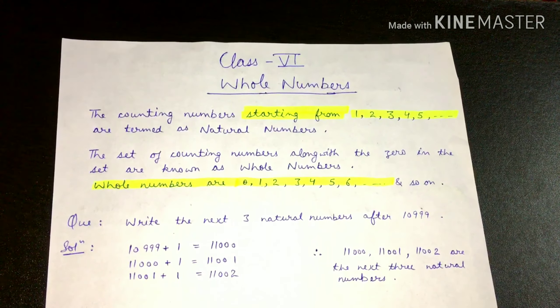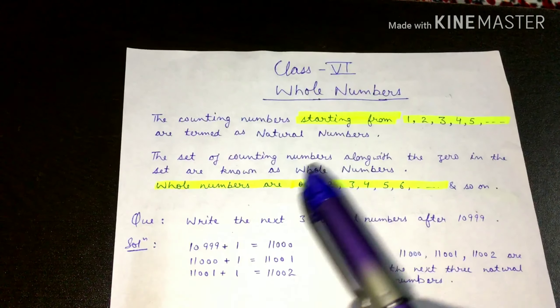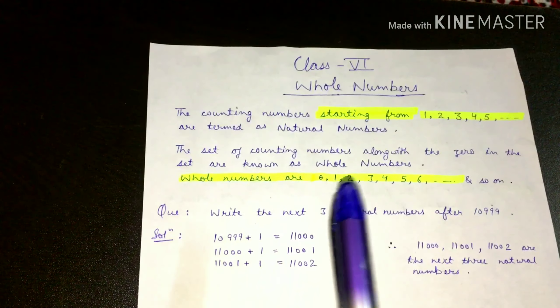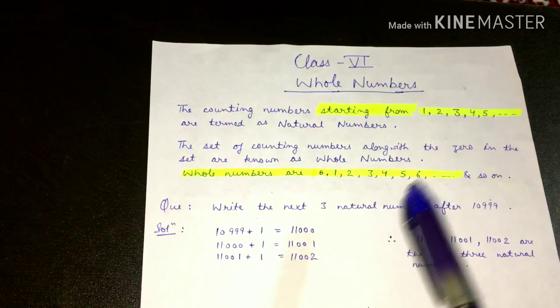Whole numbers se pehle, hame yeh pata hona zaroori hai ki natural numbers kaunse hote hain. Toh pehle natural numbers ke baare mein discuss karte hain. Natural numbers are the counting numbers starting from one — wo numbers jo one se start hote hain unko hum natural numbers bolte hain.